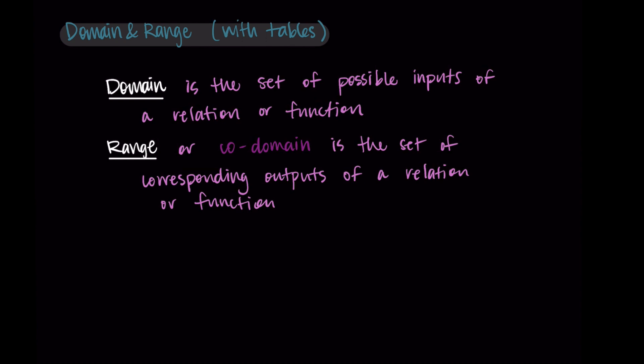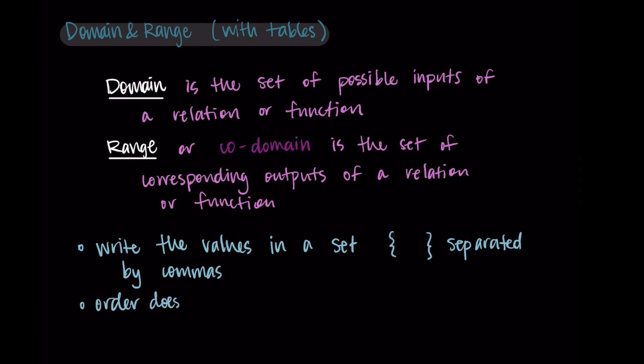So here are some things to know about domain and range with tables before we start an example. What we'll do is write the values for either the domain or range in a set with curly braces, and then each of the values will be separated by commas. Then when we do this, order of the items does not matter.